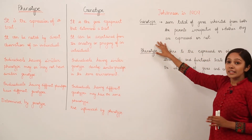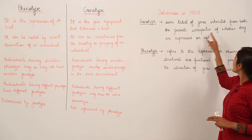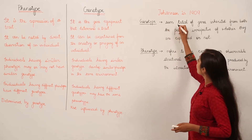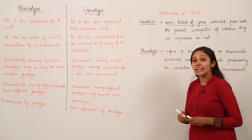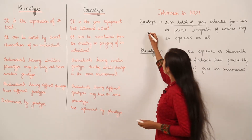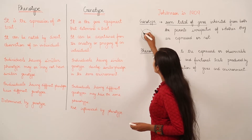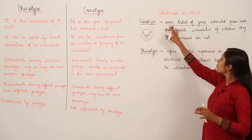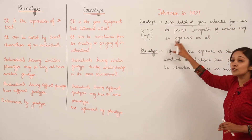What do we mean by genotype? It is the sum total of genes inherited from both the parents, irrespective of whether they are expressed or not. It means the total number of genes. As you know, a zygote is formed after fertilization, so the zygote contains genes from both parents — from the mother and from the father.